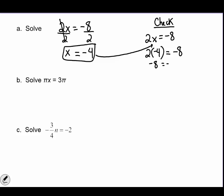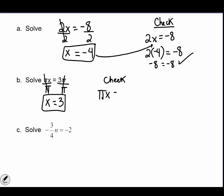Letter b: the variable is x — remember pi is a special number, not a variable. Pi is multiplying x, so I divide both sides of the equation by pi. Pi divided by pi equals 1, and 1 times x is x. On the right side, pi divided by pi equals 1, leaving just 3. So x equals 3. To check, I write the equation again, substitute 3, and multiply: 3 times pi is 3pi, which matches. My answer is correct.